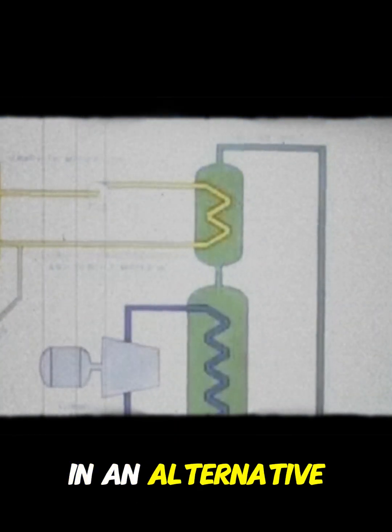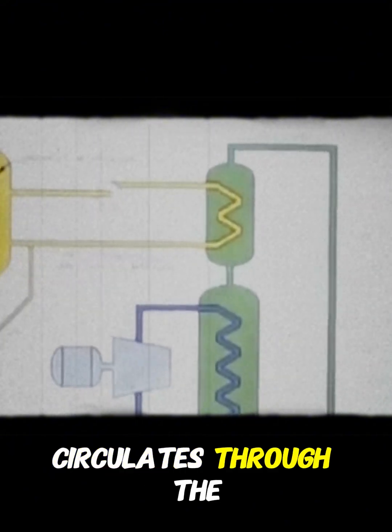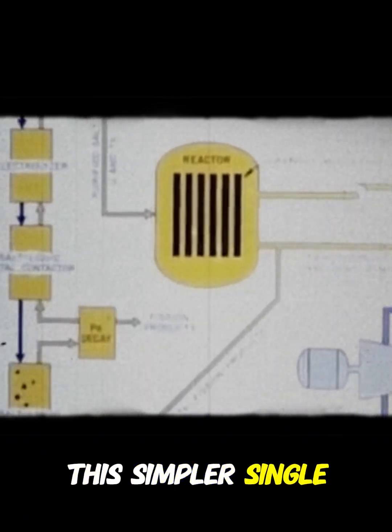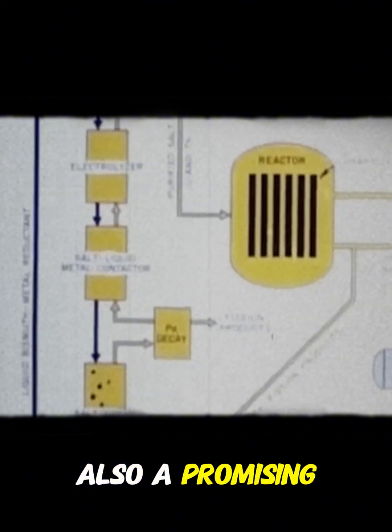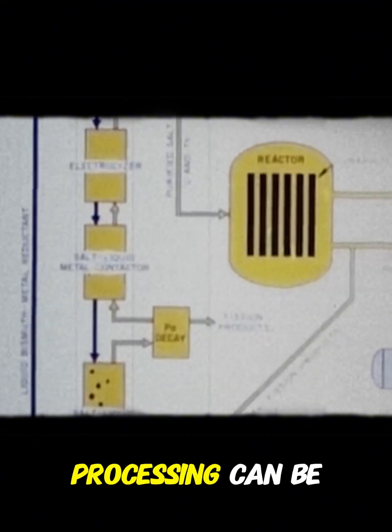In an alternative design, a salt containing thorium and uranium circulates through the reactor vessel and heat exchangers. This simpler single fluid reactor is also a promising breeder reactor if the problems of inline fuel processing can be resolved.